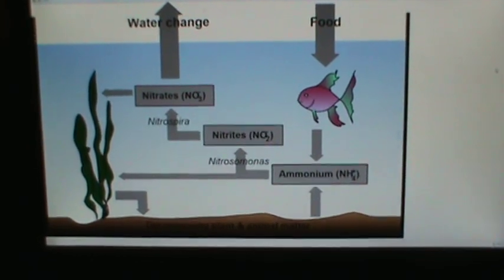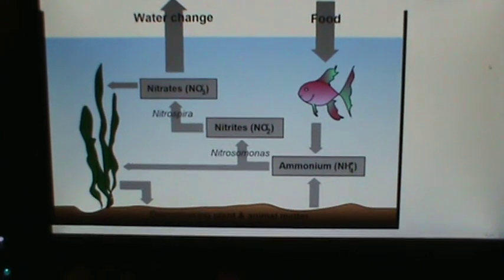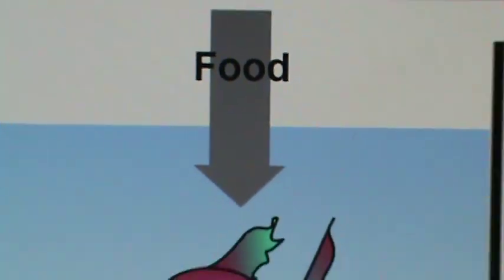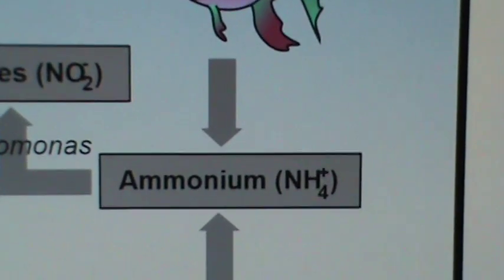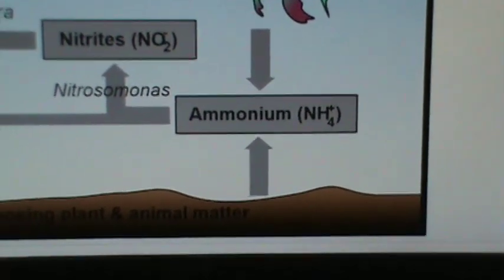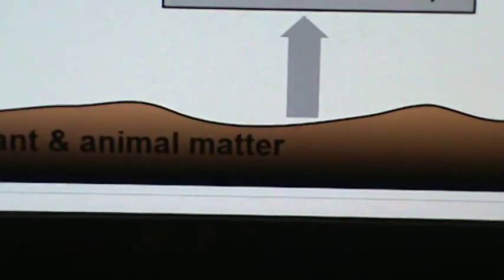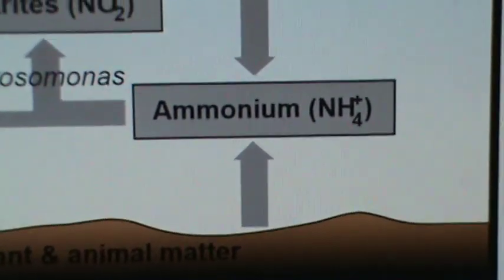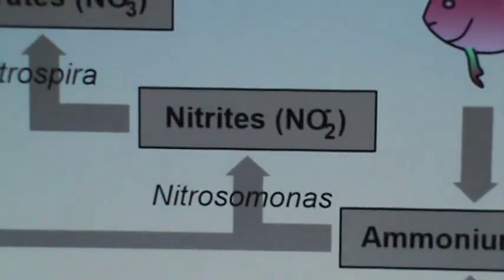I found this handy dandy chart online that gives you the process for how your fish tank environment works. Basically, you can see the food you feed your fish comes in here, the fish eat it, they do their thing and that creates ammonia. There's also going to be decomposing plant and animal matter in the bottom of your tank - some will be converted and some won't - and that will create ammonium. Then there's some bacteria, the nitrosomonas, that will convert the ammonia to nitrites.